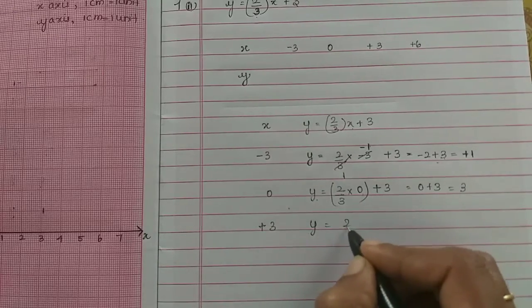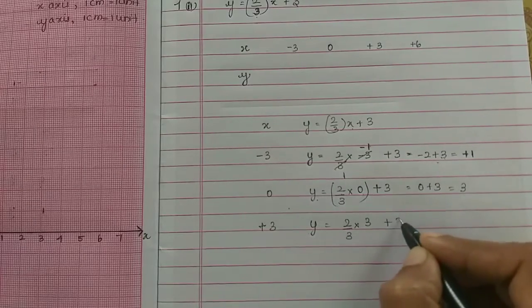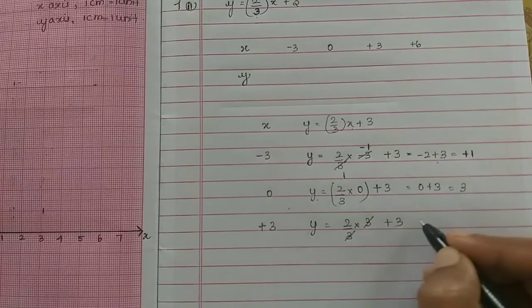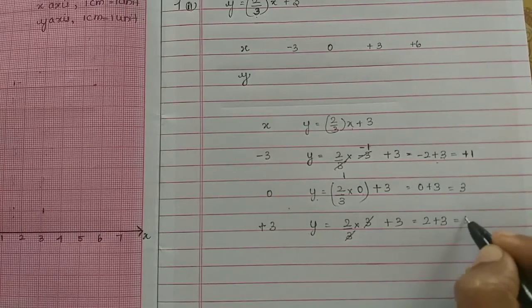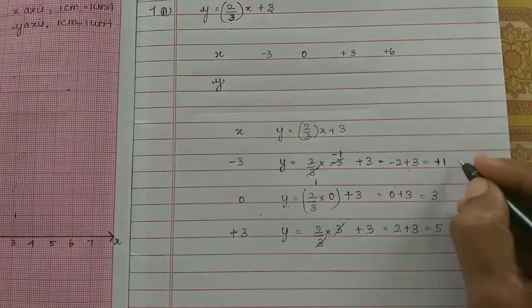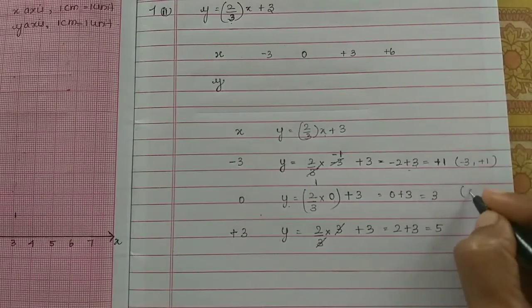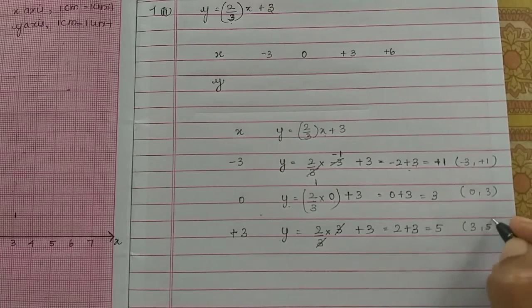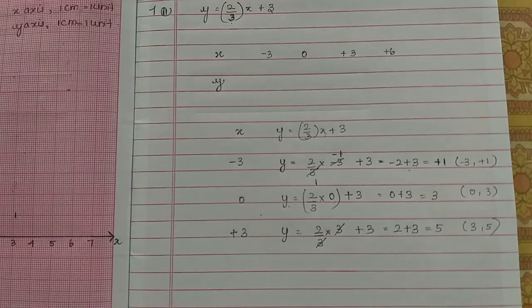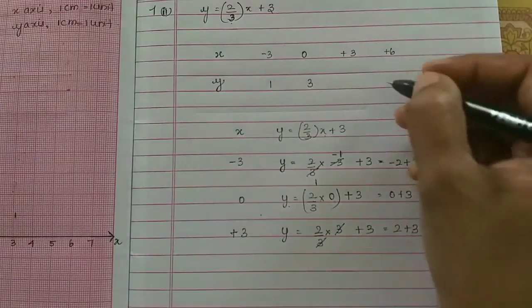So y is equal to 2/3 times x value 3, which is 5. Now we have to get the points: minus 3, plus 1, then 0, 3, then 3, 5. So first we decide we have 1, 3, 5.